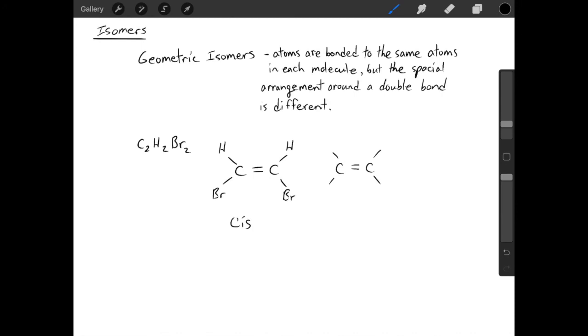When your hydrogens are on opposite sides of the double bond, and your interesting things are on opposite sides of the double bond as well, you have what is known as a trans isomer.